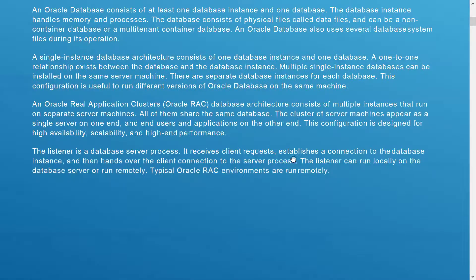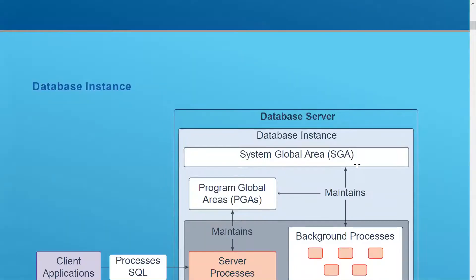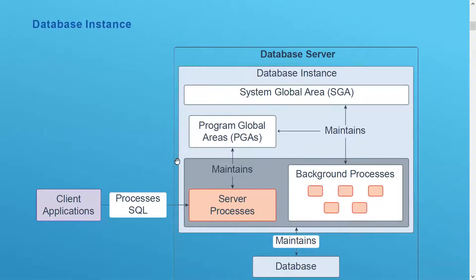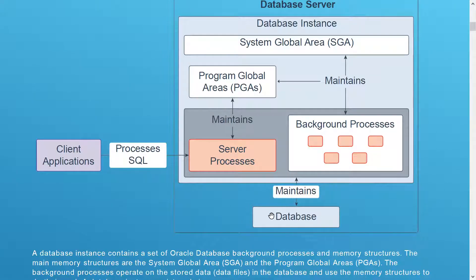Now we will look at the database instance component from the architecture diagram. A database server has a database instance, and within the instance it has a System Global Area (SGA), which is a memory component, and a Program Global Area (PGA). Client application users communicate with server processes, and there are multiple background processes. Your data files will also be there.